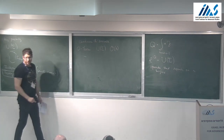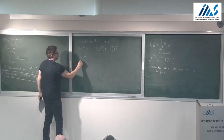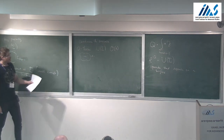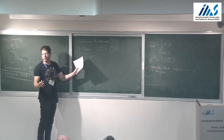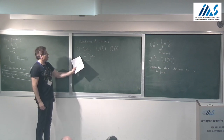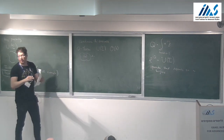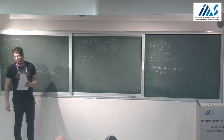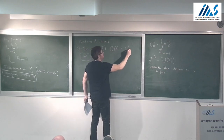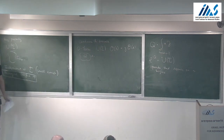If you have a local operator O supported at some point X, you can surround it by a D − 1 dimensional surface. The action of the symmetry is what happens if this operator is inside versus outside. Since this operator is topological, you can shrink it, and eventually you get a new local operator, perhaps up to a phase or group transformation.